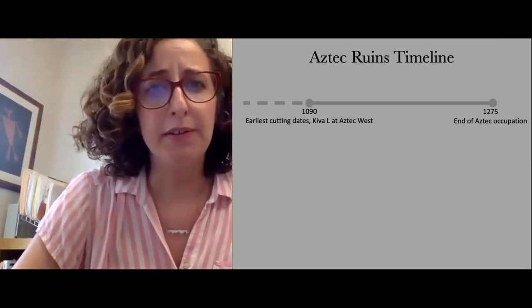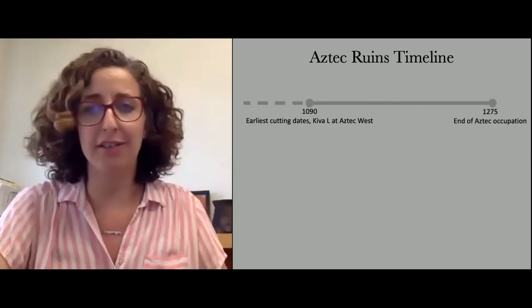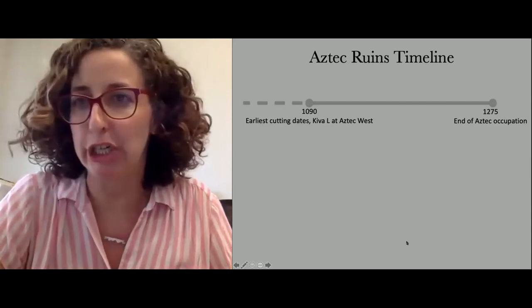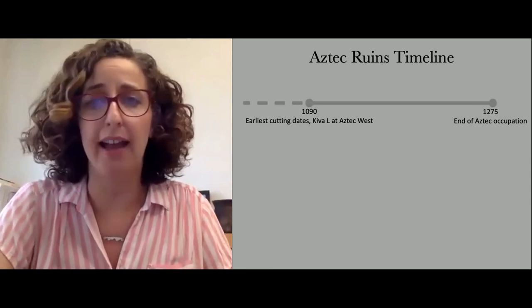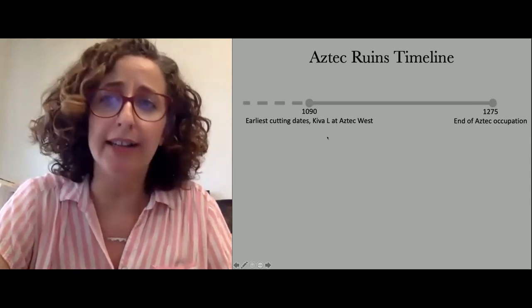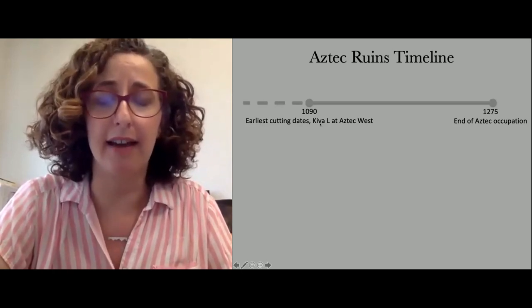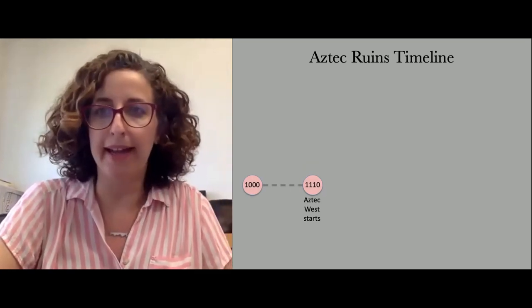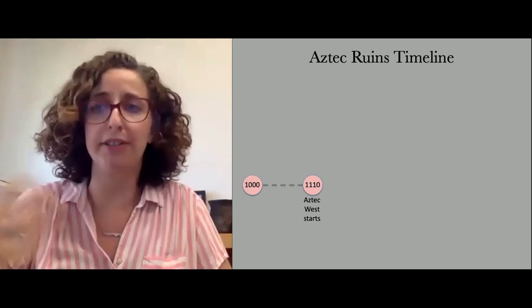Generally at Aztec, before our research, the absolute earliest evidence of construction was about 1090 — when they started cutting wood for Aztec West, though it may have sat for some time before building actually started. Construction on Aztec West really got going at 1110 and we have lots of tree ring dates for that from previous research. So that's a really clear date — 1110 — with a little bit of activity before that. Our big question at Aztec North was whether it was built before Aztec West, just after, or at roughly the same time.